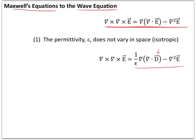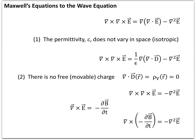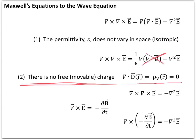The second mathematical step is to use Gauss's law, but to do so we need to make a second assumption: there's no free or movable charge in the region we're interested in. With Gauss's law we know the divergence of the electric flux equals the charge; if we assume there's no charge, that term equals zero, and we can cross it out of the equation and simplify the curl term. That's step number two of this derivation.